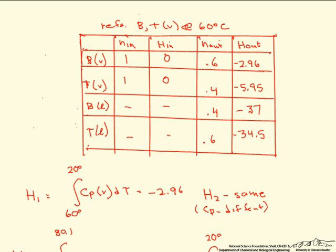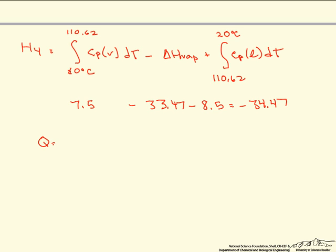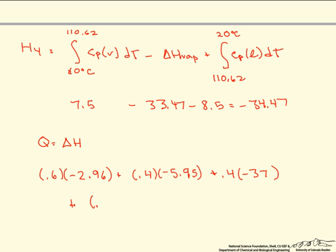And if you look at our table now to find our Q, all we have to do is look at the enthalpies multiplied by their moles coming out because there are no enthalpies coming in. And the reason for that is that's how we set our reference state. So our Q is just going to be delta H, which in this case is just the final enthalpies. And so when we multiply the right side of the table, we have 0.6 moles times minus 2.96 plus 0.4 moles times minus 5.95 plus 0.4 moles times minus 37 plus 0.6 moles times minus 34.5. And that gives us a Q value of minus 40 kilojoules.